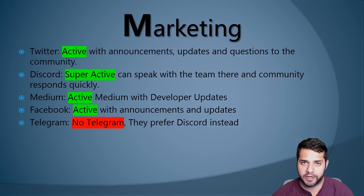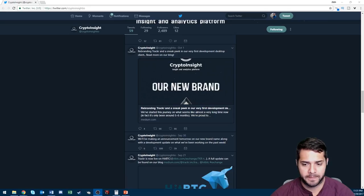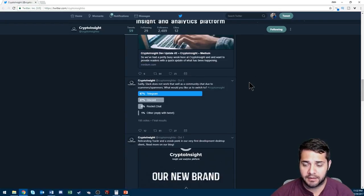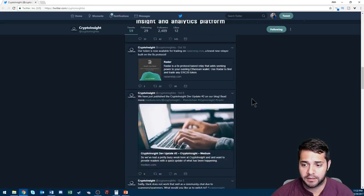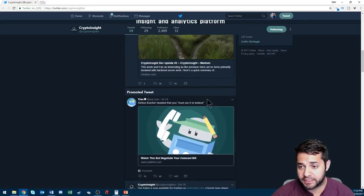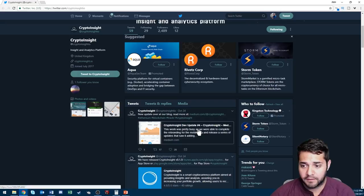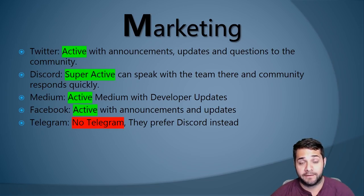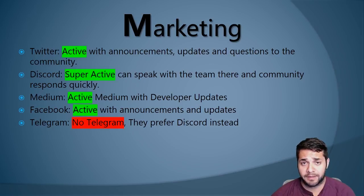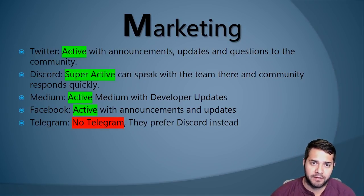Now for their marketing: they have Twitter, where they're active with announcements, updates, and questions or polls from the community. They've been fairly active — they posted when they got on BTC, they have polls, and they're giving developer updates. It's good to see that they're at least semi-active on Twitter. Then we have Discord — this is where they're super active and you can speak with the team, and the community also responds quickly. This is probably the best part and one of the best I've seen from any team. They're super easy to get a hold of, give feedback to, and get any question answered.